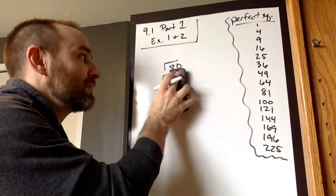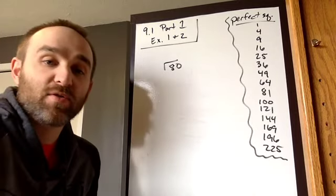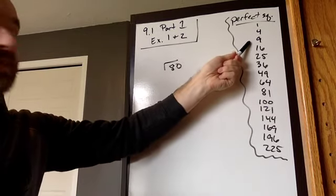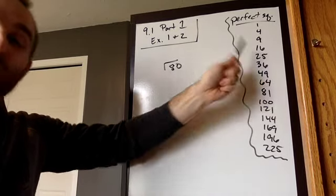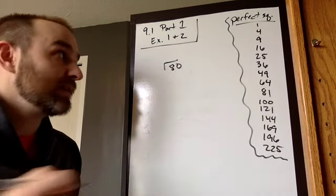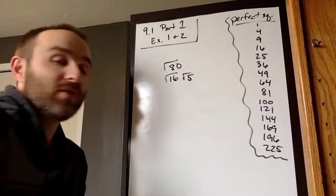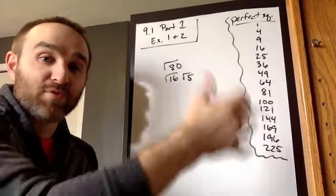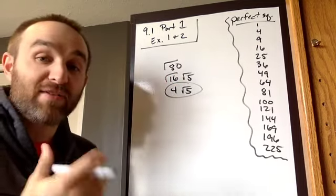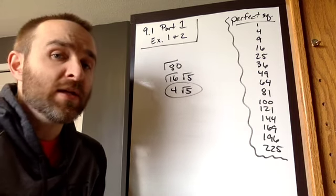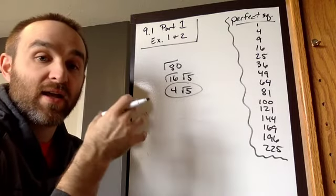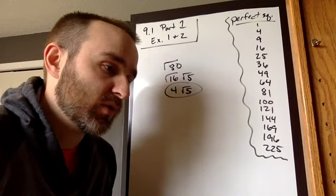Let's think about what is a bigger perfect square factor that goes into 80. Four works, nine doesn't go into 80, but 16 does — 16 times five is 80. So I can go straight to the square root of 16 times the square root of five, and the square root of 16 is four. That gets me right down to four root five right away. The biggest perfect square factor possible is going to get you that answer quicker.